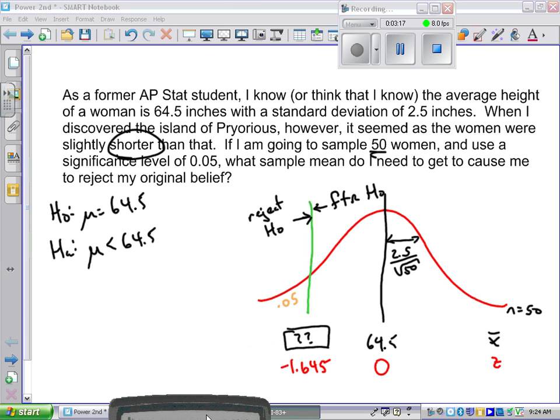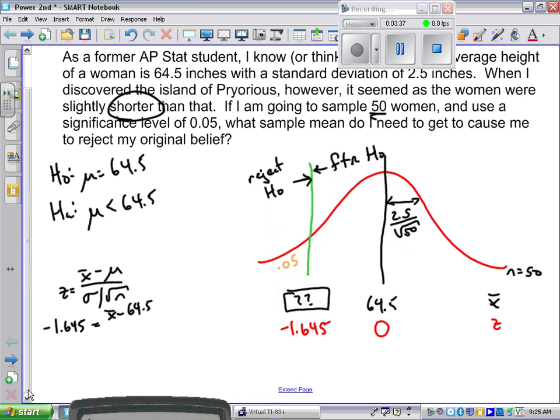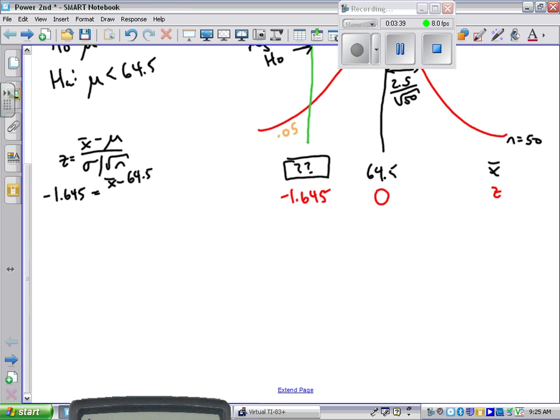And what I want to do is take that negative 1.645 and unstandardize it. Put it back in terms of x-bars or in terms of inches of women. So I know that the formula is z = (x̄ - μ)/(σ/√n). So it's -1.645 = (x̄ - 64.5)/(2.5/√50). I'm confident that you could work out that problem on your calculator, so I've already done it for you. X-bar is 63.92.